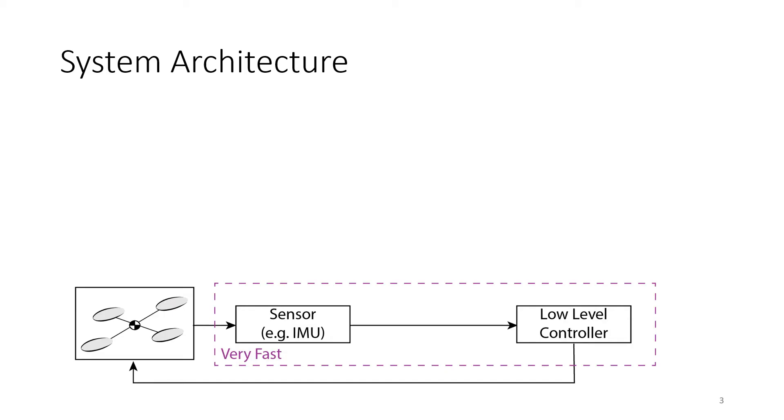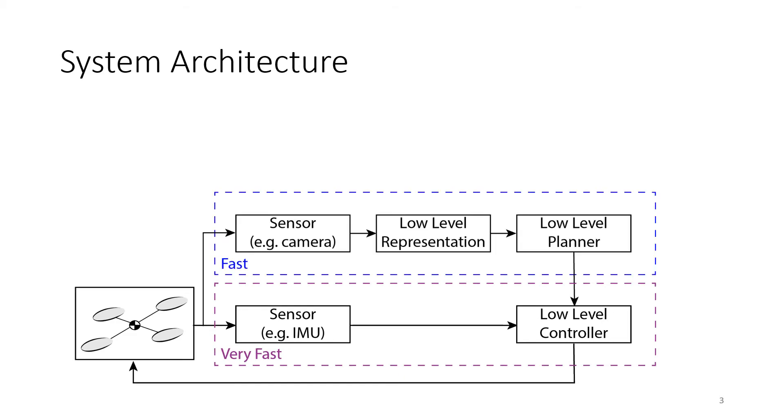Before we get too much into the details, I'm going to give a quick high-level overview of how our planner fits into the entire system architecture. So typically for a quadcopter, we have this very fast low-level control loop where we're taking measurements from, for example, an IMU or accelerometer and rate gyro and using those to do, for example, attitude control or thrust control.